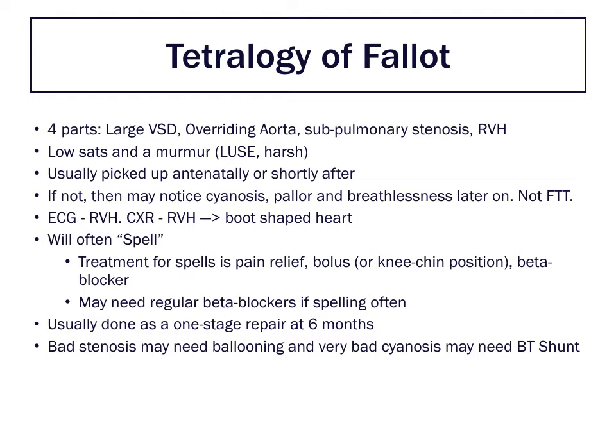Think of blood flow like an electrical circuit: if you increase resistance in part of the circuit, more current will preferentially go down the easier route, the route of less resistance. Here, we have sub-pulmonary stenosis - stenosis that occurs just before the pulmonary valve, though it can be anywhere and just gives it a slightly different name. This causes a reduction of flow across the pulmonary valve, an increase in resistance, and that is why blood preferentially goes into the aorta.